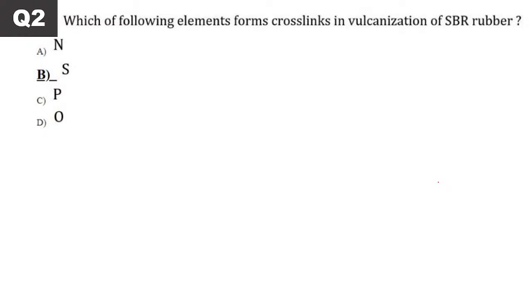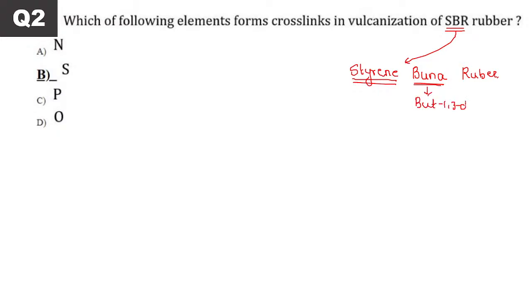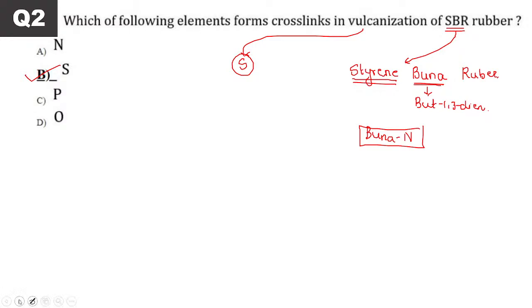Next, question number 2: Which of the following elements form crosslinks in vulcanization of SBR? SBR full form: S means styrene, B means butadiene (Buna = butadiene shortform, but-1,3-diene), R means rubber. So Buna N is also called SBR. In vulcanization, the element to note is sulfur — option number B.